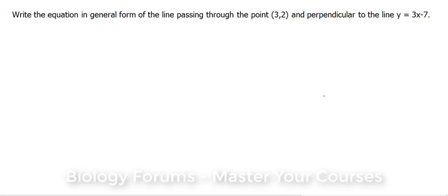They're asking something very specific here. First, they're asking for a line that passes through the point (3,2) on a Cartesian plane, and it also has to be perpendicular to this line.